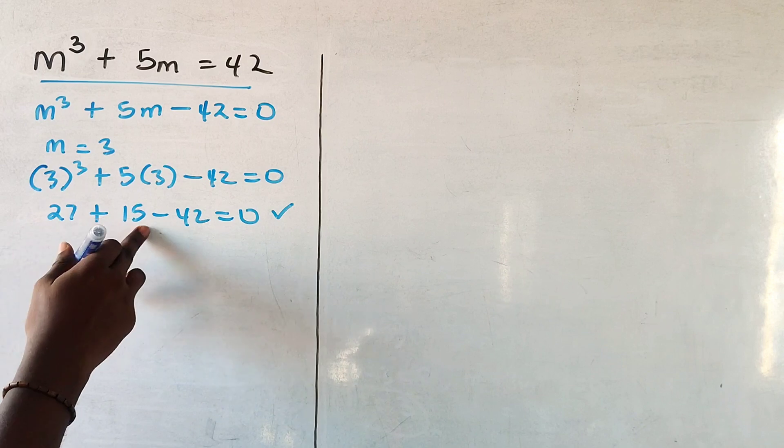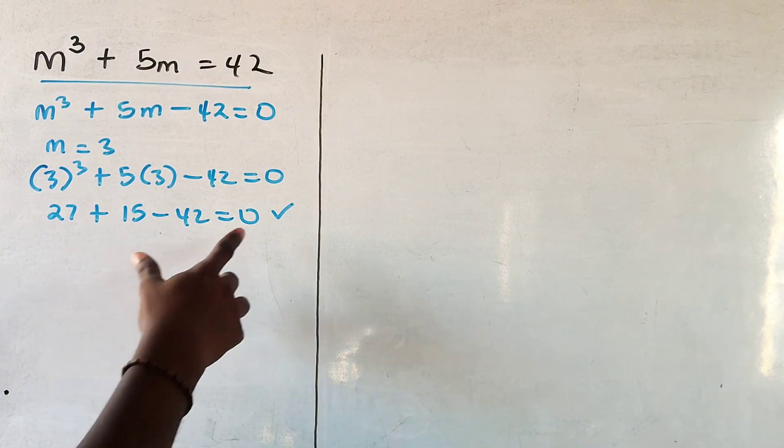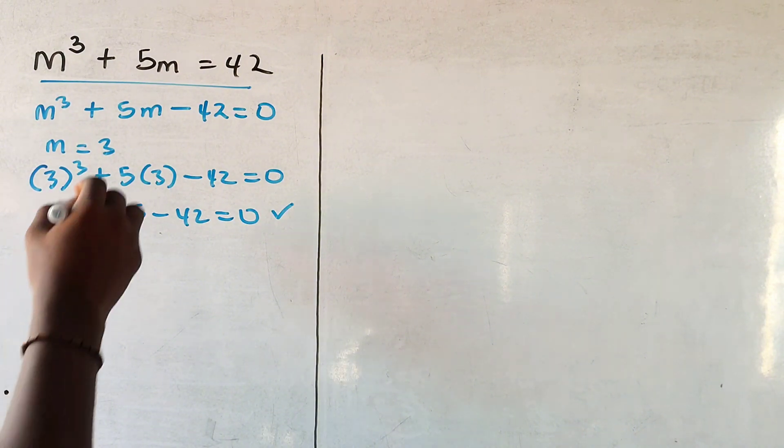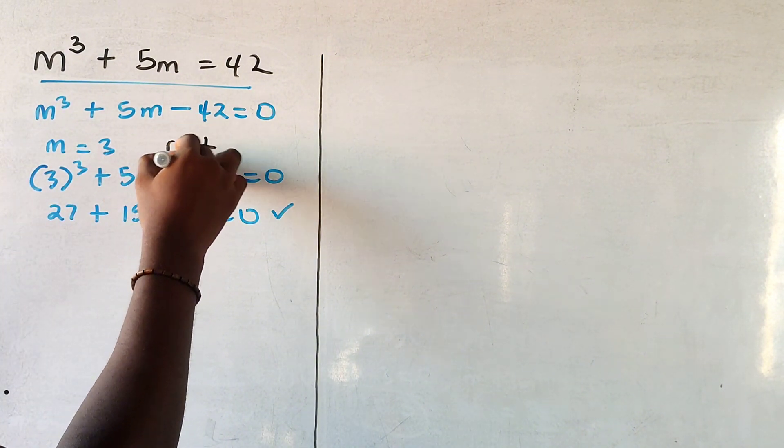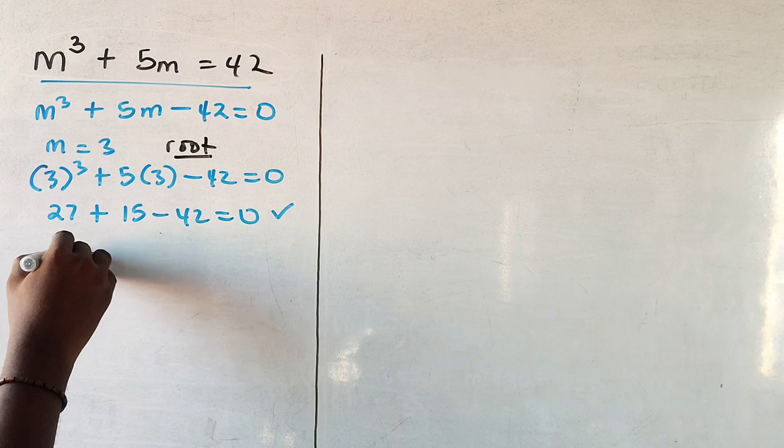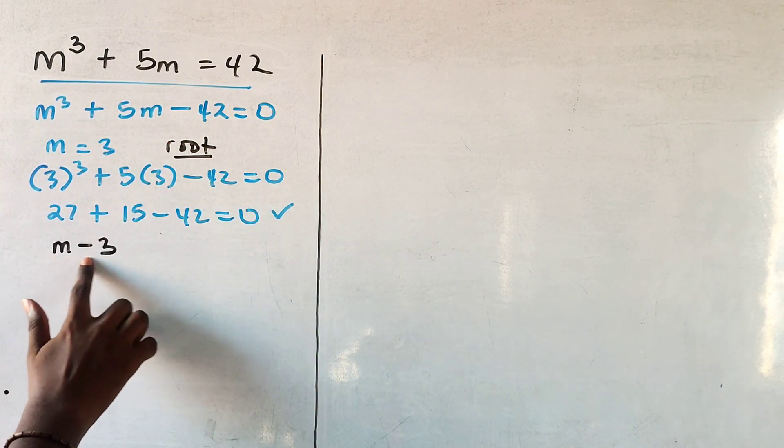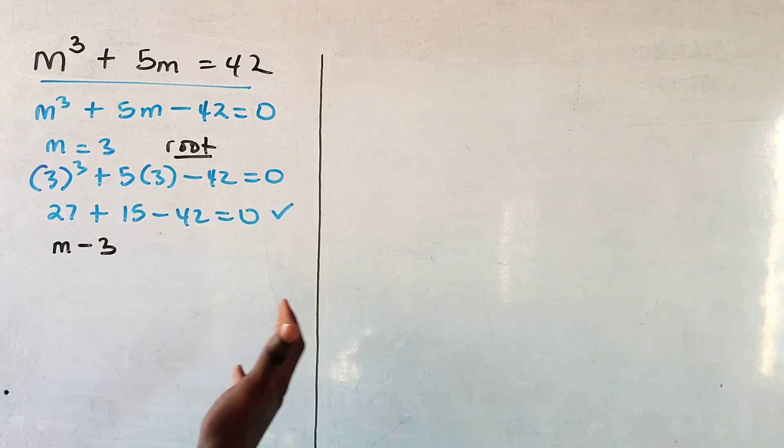Now from this m equals 3, I could get a factor of this cubic equation. This is the root here, so I get the factor m minus 3. Now I'm going to divide this cubic equation by this factor to get a quadratic equation.